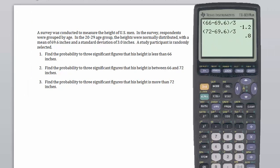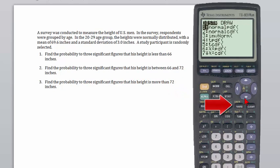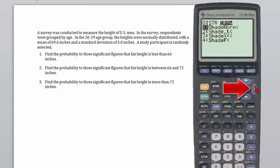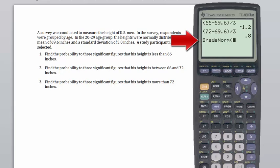Now going to the shade normal function, which is gotten by going to the yellow second key, the distribution button, then right arrow to the draw menu, and select enter to select the shade normal function.